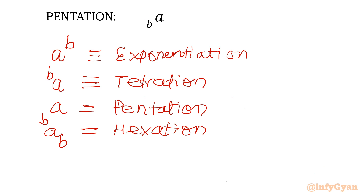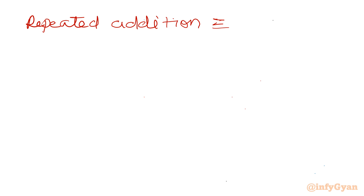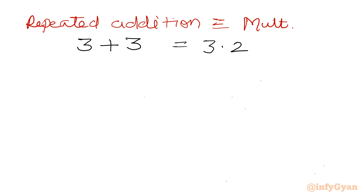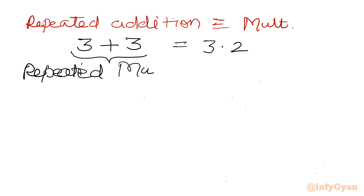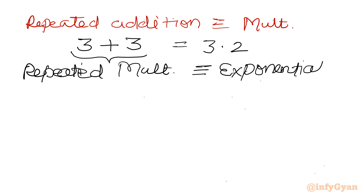Now starting from the basics we all learned in school: repeated addition is nothing but multiplication. For example, 3 plus 3 is 3 times 2, which equals 6. Similarly, repeated multiplication is nothing but exponentiation.